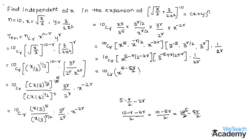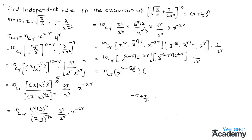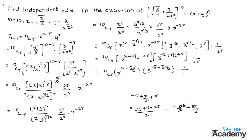Now let us simplify the power of 3. The numerator terms give −10 + r + 2r = −10 + 3r, so divided by 2 we get (−10 + 3r)/2 = −5 + 3r/2. Therefore the 3 term becomes 3^(−5 + 3r/2) · (1/2^r).